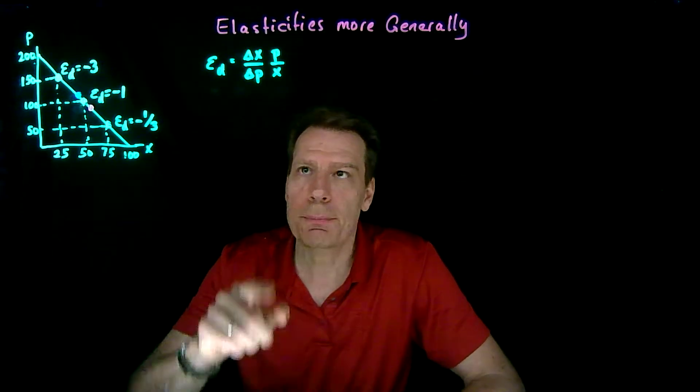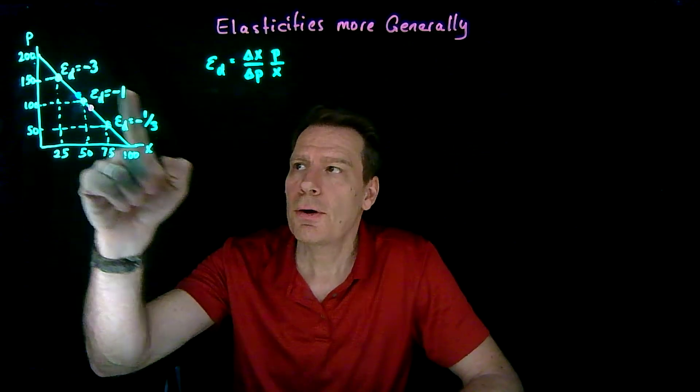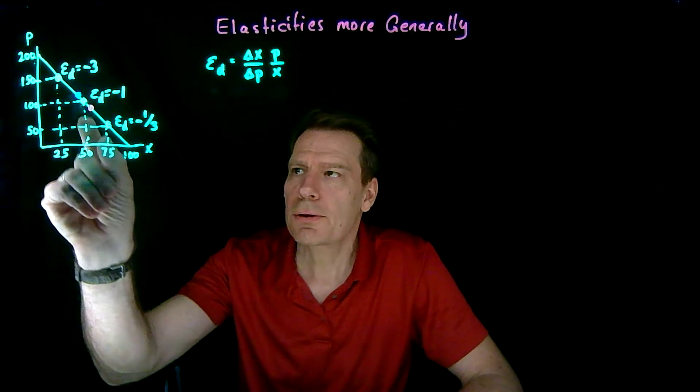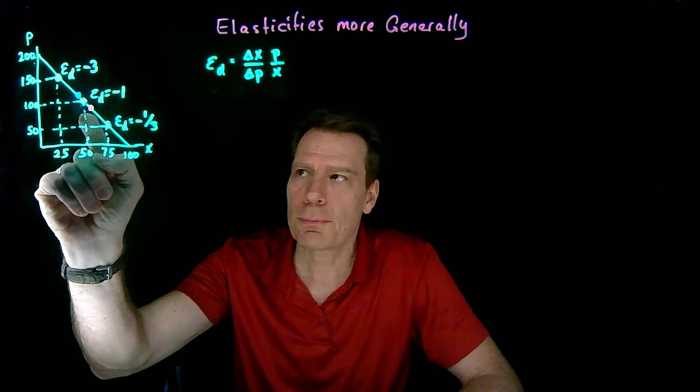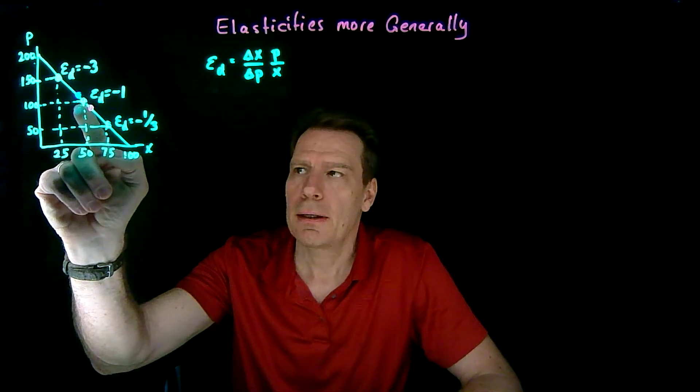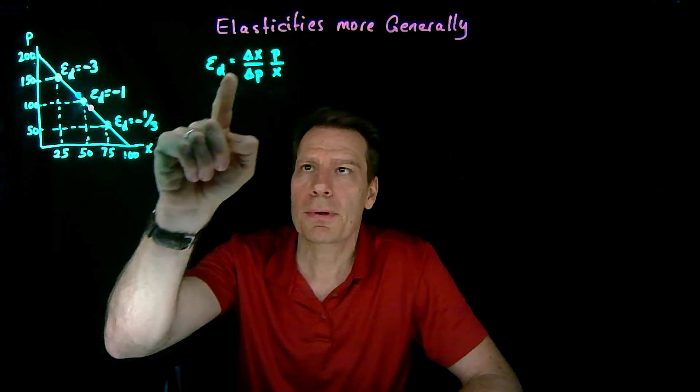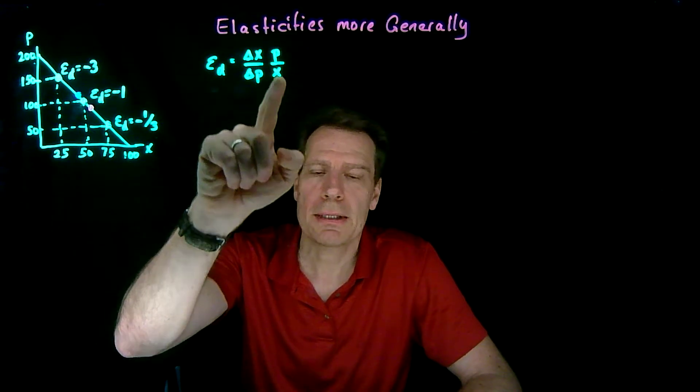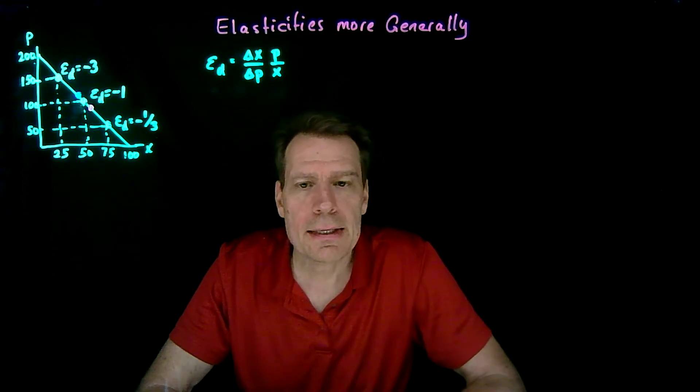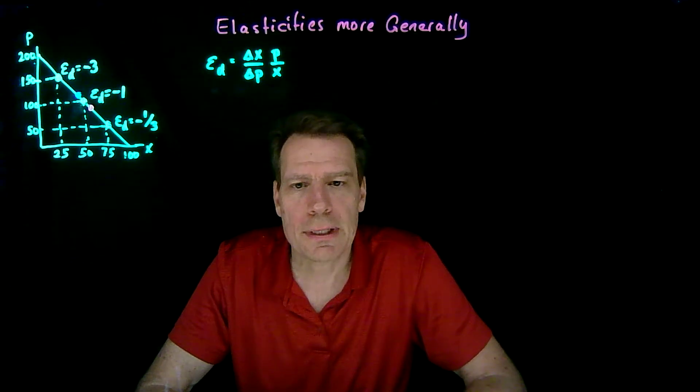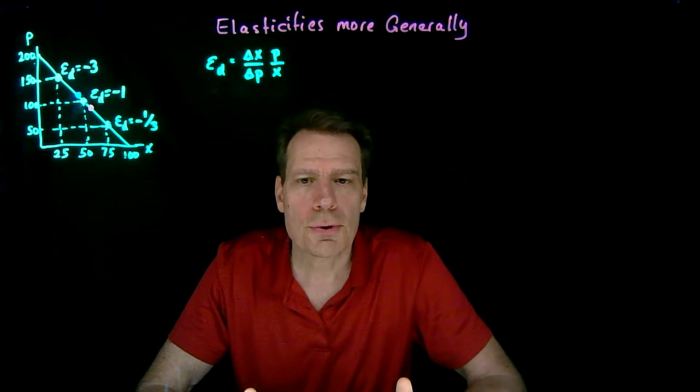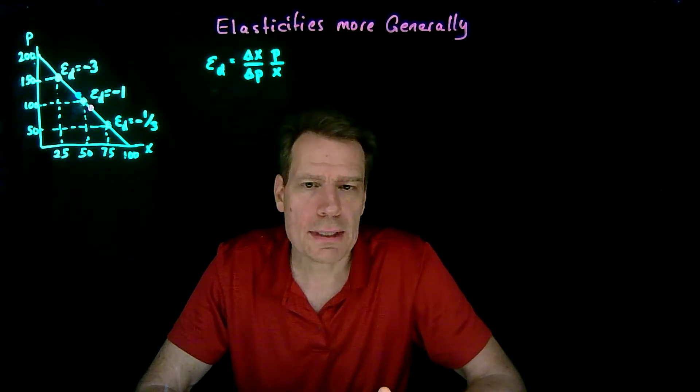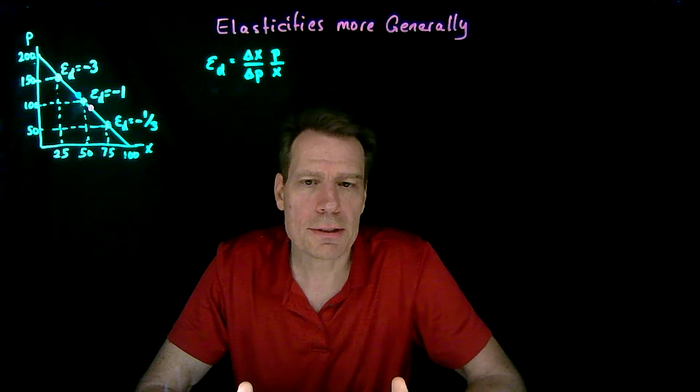We've now seen how we can calculate the price elasticity of demand for any point along a linear demand curve. We just take two points that are equally distant from the point we're interested in, use those two points to come up with our change in x and our change in p, and then use the point itself to come up with the p and the x. This way of calculating the elasticity will get us the right answer so long as the demand curve is a straight line. But when it's not a straight line, it'll only give us an approximation.